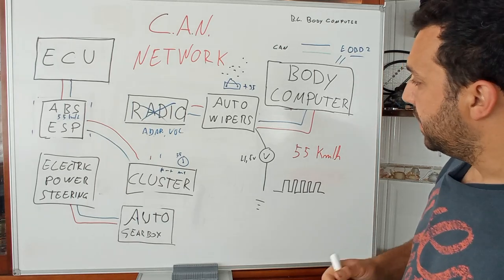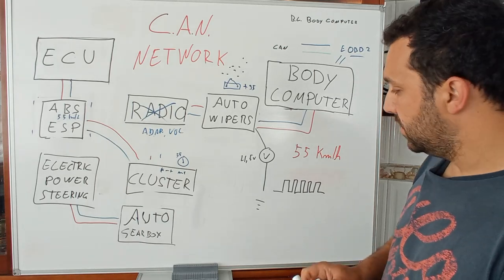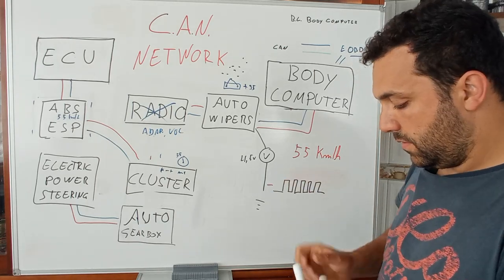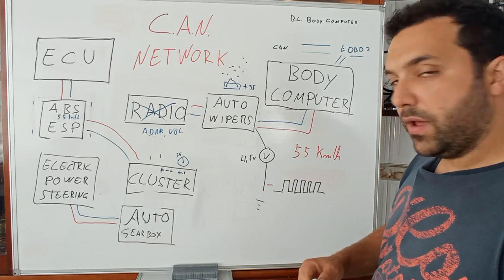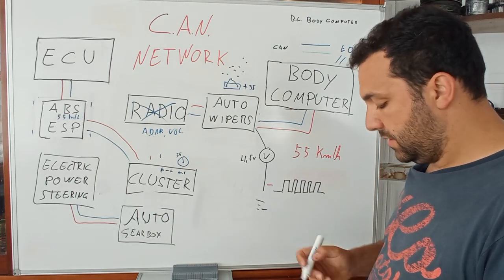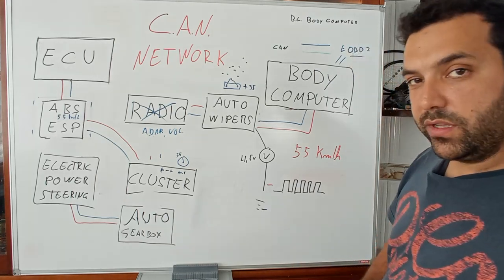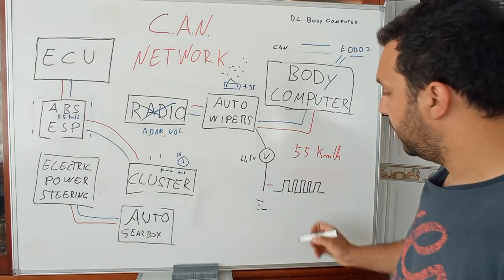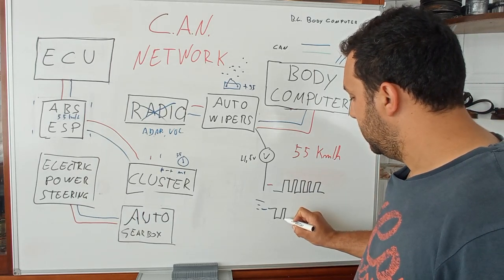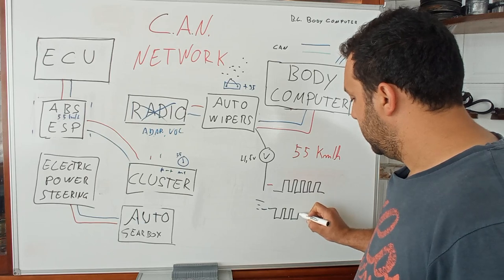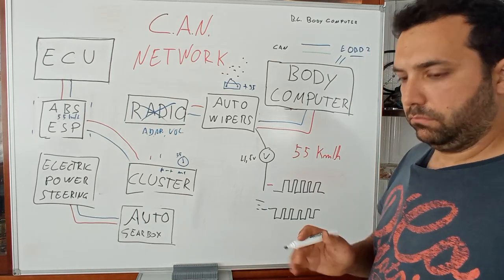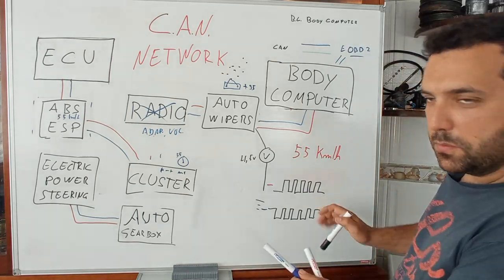On one line — let's say the red one — you have a square wave signal, and on the blue one you have exactly the same signal only in reverse.